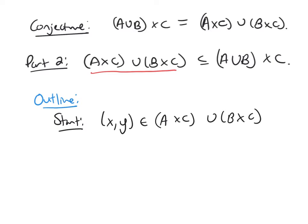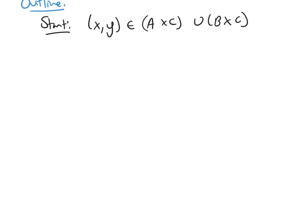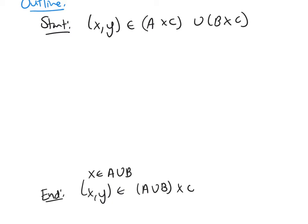What am I trying to get to? I'm trying to get to that this element is in the right-hand set. So the end of my proof would be that (x, y) is in A union B cross C. Now, before we fill in the middle, what does this mean? This means x is in A union B and y is in C.